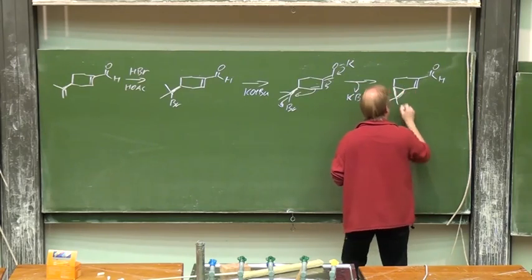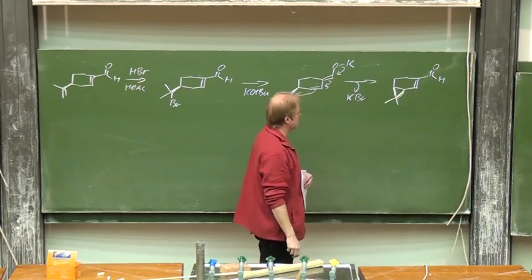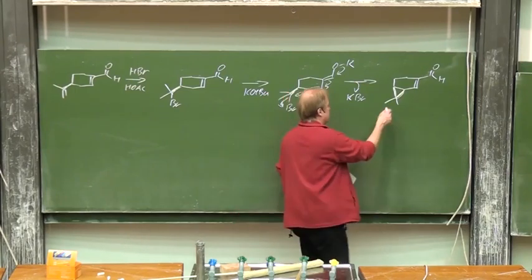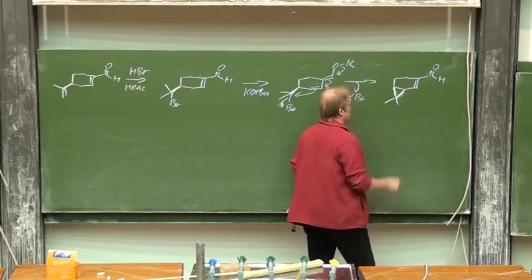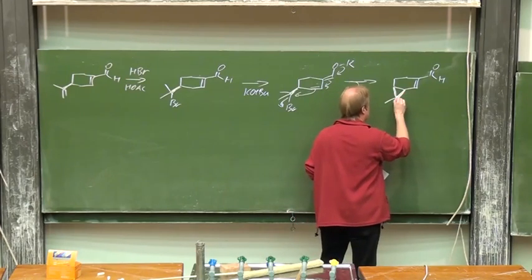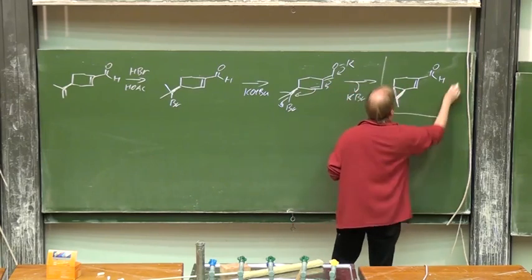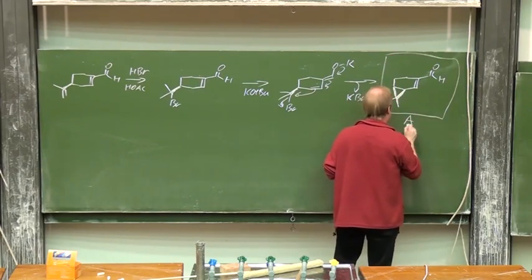And an intramolecular substitution will lead to this structure with that dimethylcyclopropane moiety. Let's call that A.